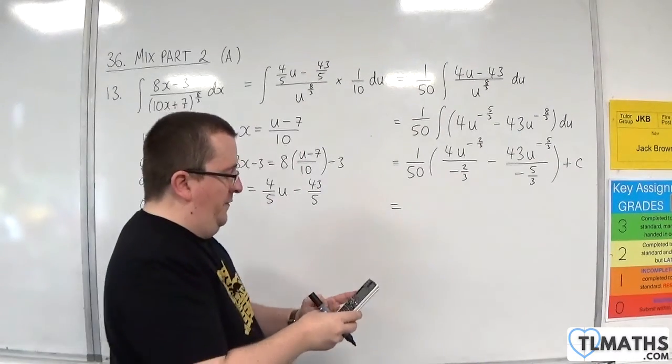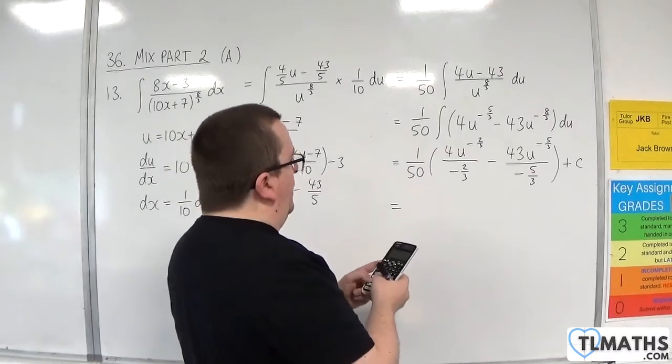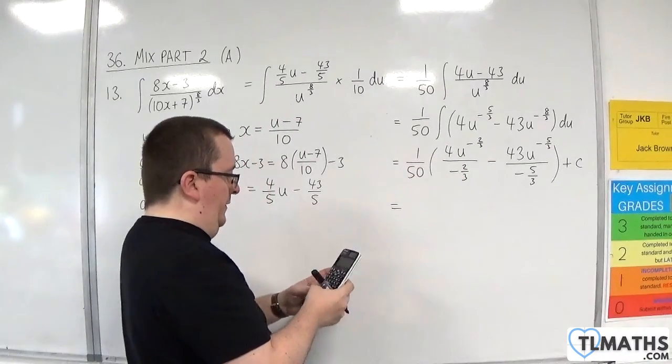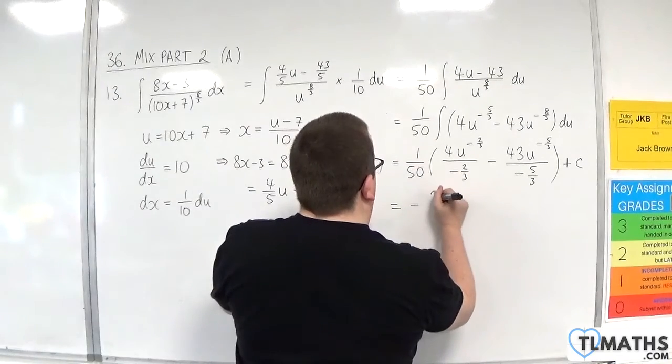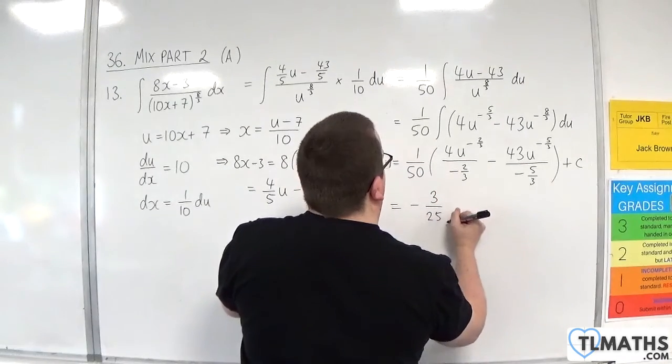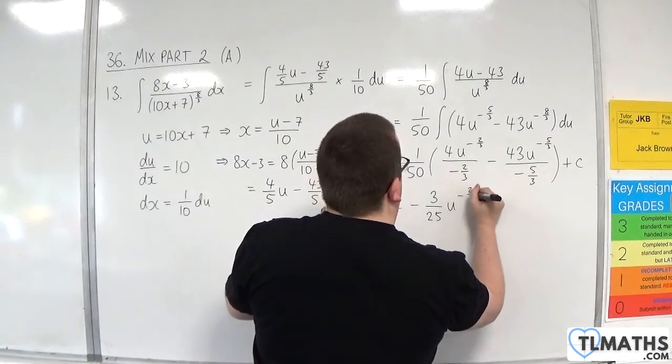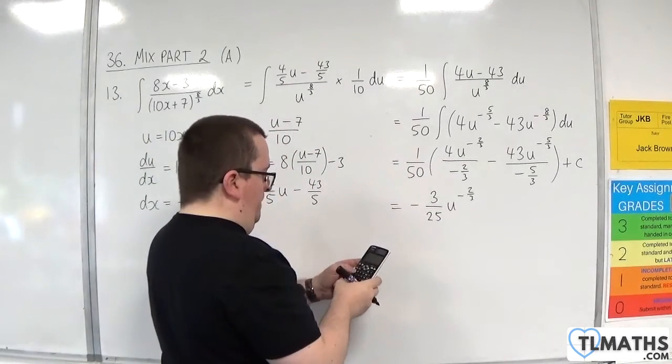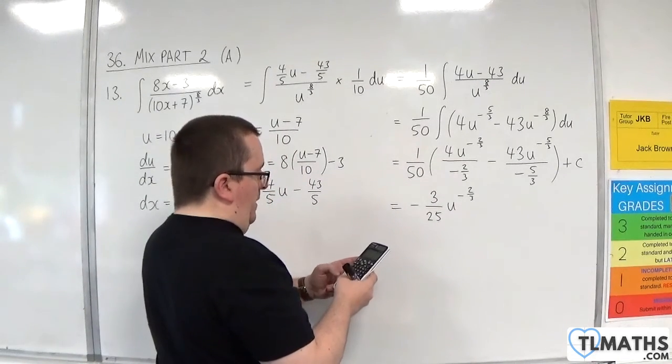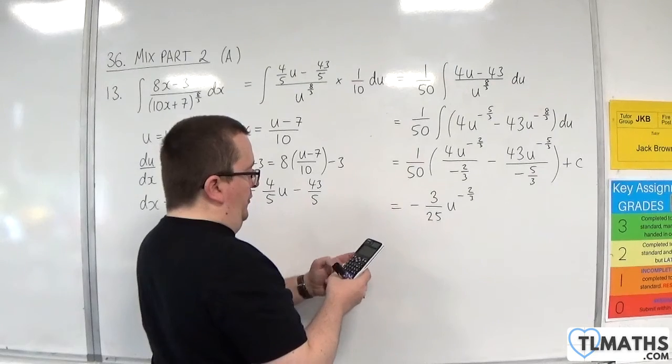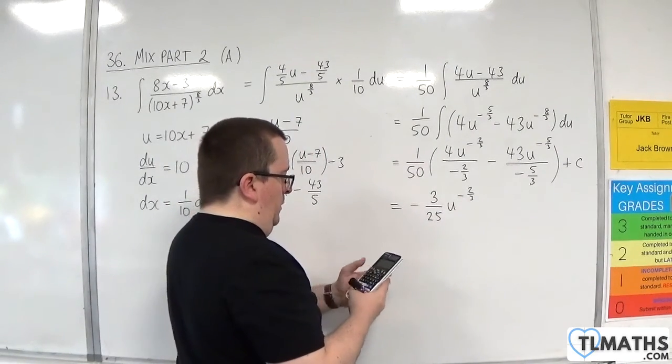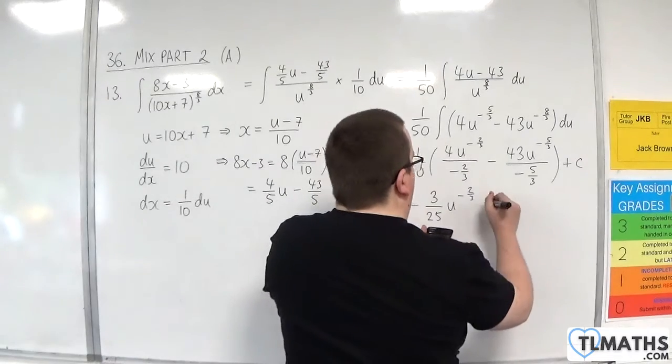So we have the 1 over 50 times by 4 divided by minus 2 thirds, and we get minus 3 over 25u to the minus 2 thirds. Then we've got 1 over 50 times by minus 43 divided by minus 5 thirds, which is 129 over 250.